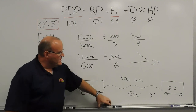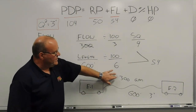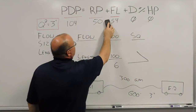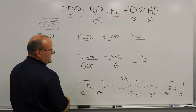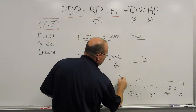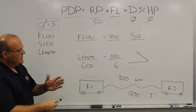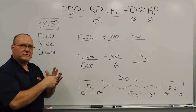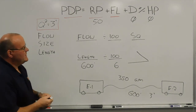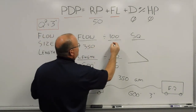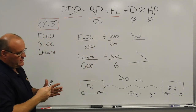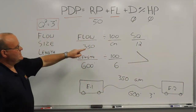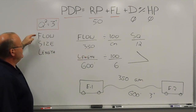We'll do one last example keeping the length the same but changing the flow to an in-between number so we get used to calculating with that. Instead of 300 gallons a minute, let's say it's 350. When we have an in-between number — 350 falls between 300 and 400 — instead of simply dividing by 100 we cross-multiply using the hand method: 3 times 4 equals 12. So there are 12 pounds of friction loss through every 100 feet of 3-inch hose flowing 350 gallons a minute.